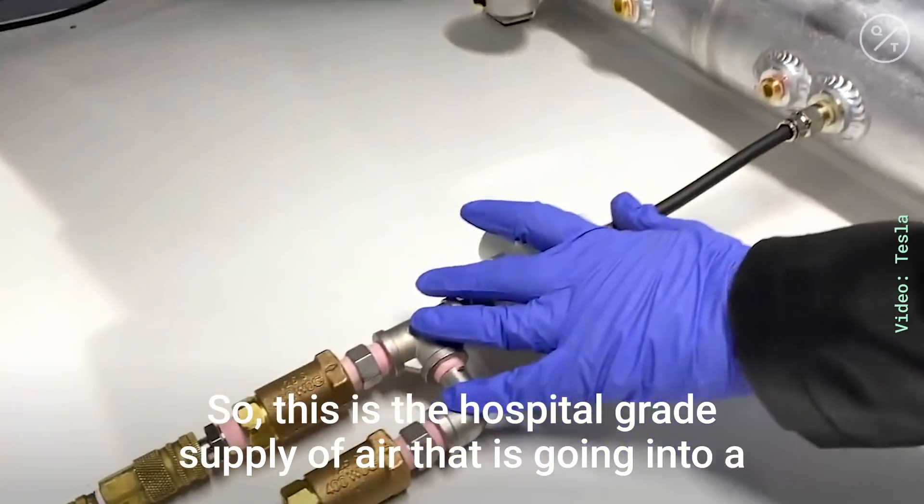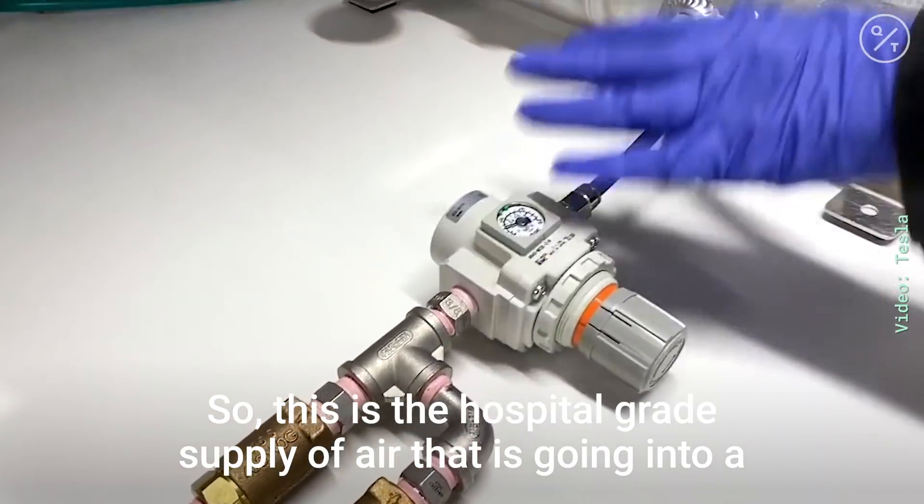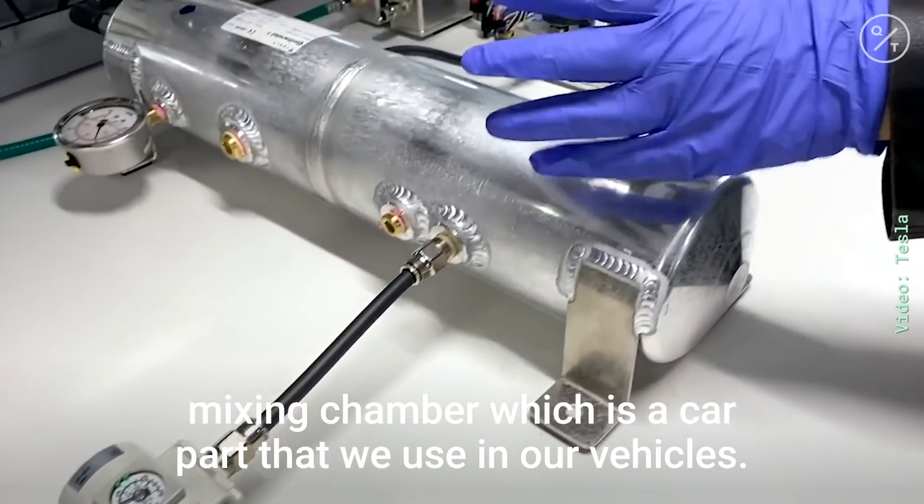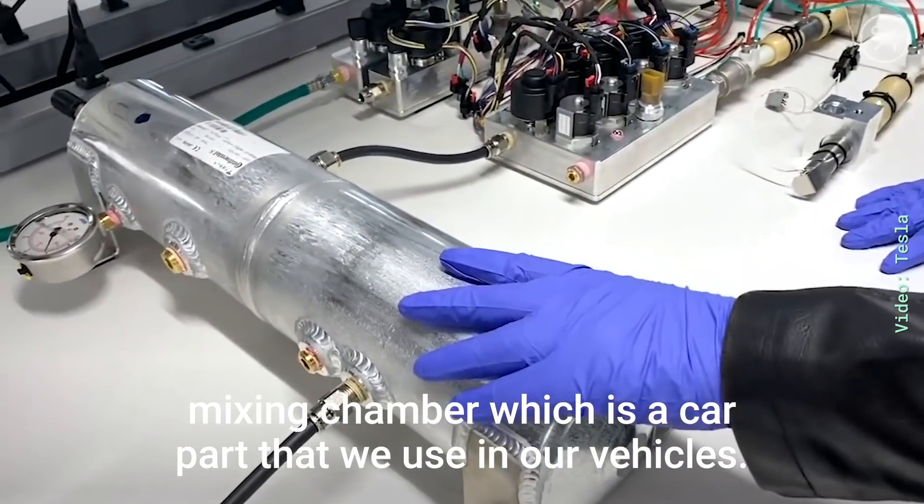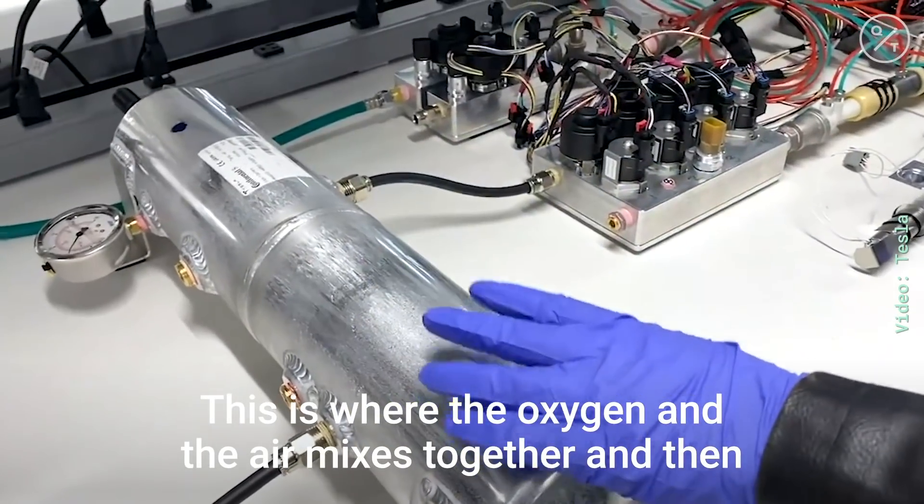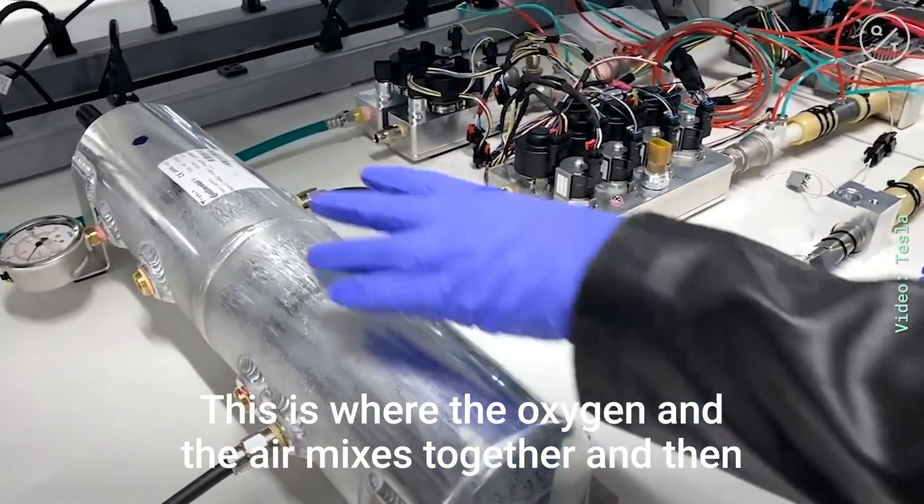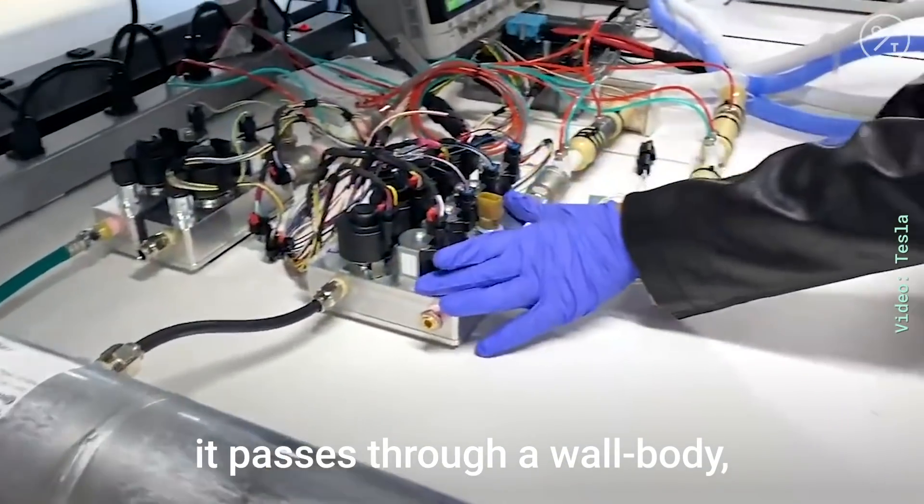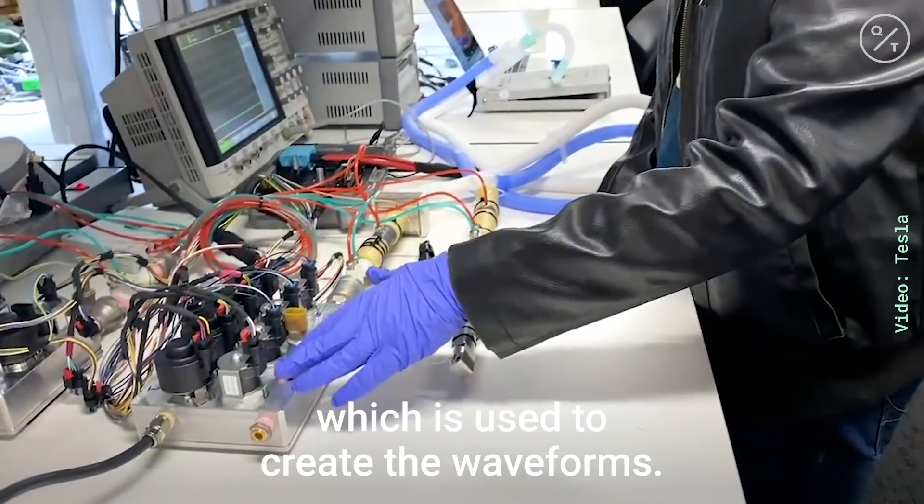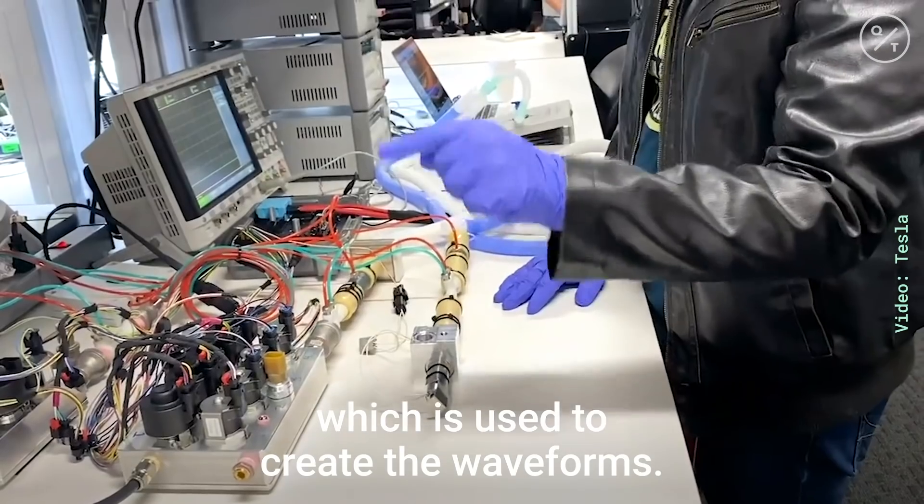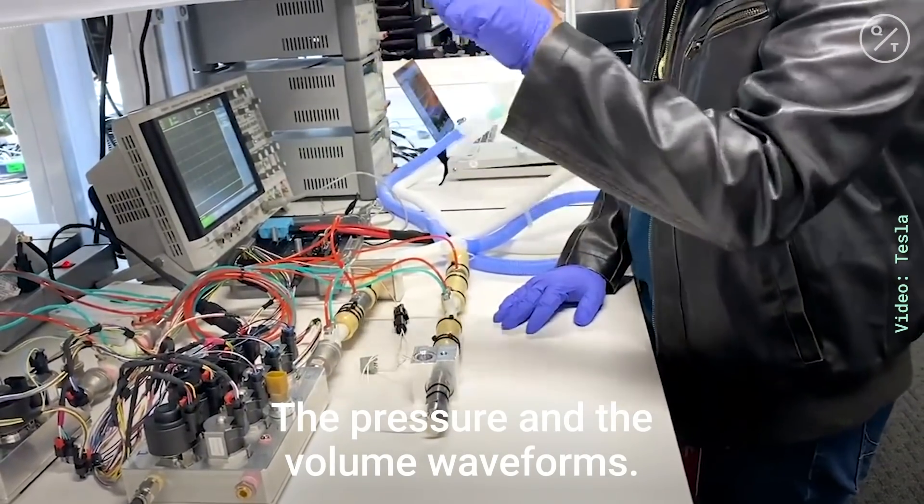So this is the hospital-grade supply of air that is going into a mixing chamber, which is a car part that we use in our vehicles. This is where the oxygen and the air mixes together and then it passes through a wall body which is used to create the waveforms, the pressure and the volume waveforms.